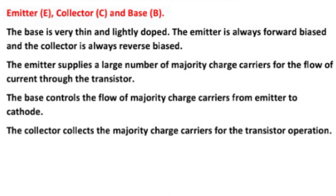The emitter is always forward biased and the collector is always reverse biased. The emitter supplies a large number of majority charge carriers for the flow of current through the transistor. The base controls the flow of majority charge carriers from emitter to collector. The collector collects the majority charge carriers for the transistor operation.